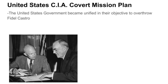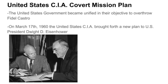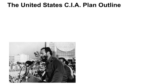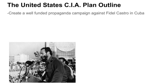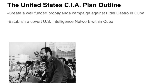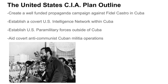The United States government became unified in their objective to overthrow Castro. On March 17, 1960, the CIA brought a new plan to President Dwight D. Eisenhower with four main steps: first, creating a well-funded propaganda campaign against Castro in Cuba; second, establishing a covert U.S. intelligence network within Cuba; third, establishing U.S. paramilitary forces outside of Cuba; and finally, aiding a covert anti-communist Cuban militia operation.